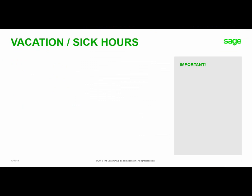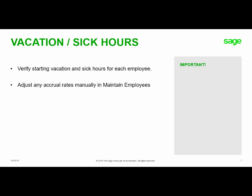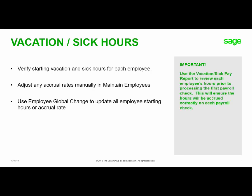This is also the time to update your employee vacation and sick time. You want to verify that each employee's starting vacation and sick hours in Maintain Employees is correct. When you close the year in payroll, the ending balance for each employee's vacation and sick hours will automatically roll forward into the start balance. If you need to adjust start hours, you can edit them manually in Maintain Employees, or use the Employee Global Change to update all employees' starting hours or accrual rates. This is useful if you do not carry forward any balance from the previous year or if there has been a company change to the accrual rate. You can use the vacation sick pay report to review each employee's hours prior to processing the first payroll check.